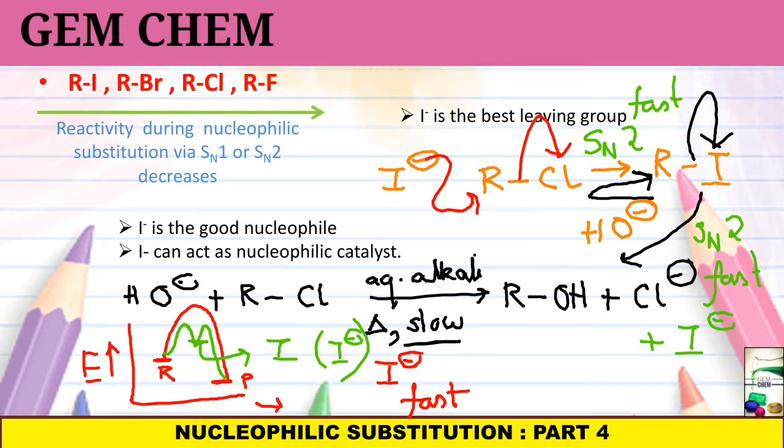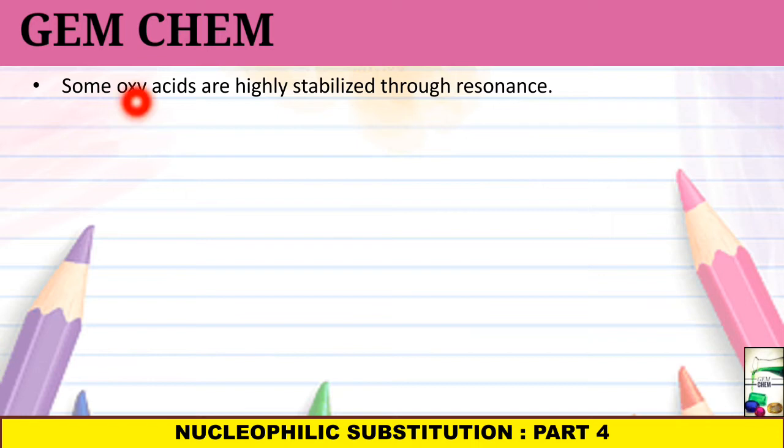We had seen one application of best leaving group. Now, we will see different kinds of more leaving groups. Some oxo acids are highly stabilized through resonance and they after leaving from a compound become stabilized. So, we can conclude that these anions of some oxo acids are better leaving groups.